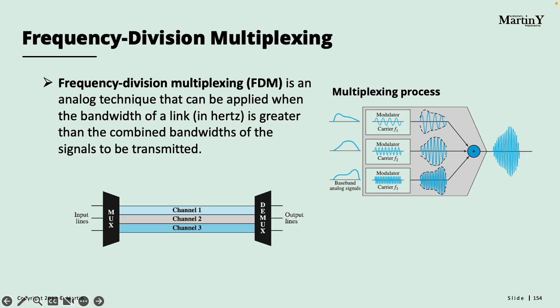Frequency division multiplexing is usually applied when our channel — cable or air — has higher bandwidth than the frequencies of the signals. For example, if we have a cable with bandwidth of eight hertz and the human voice uses four hertz, we can do frequency division multiplexing and send two voice messages through one channel. One message stays from zero to four hertz while the other is shifted to four to eight hertz.